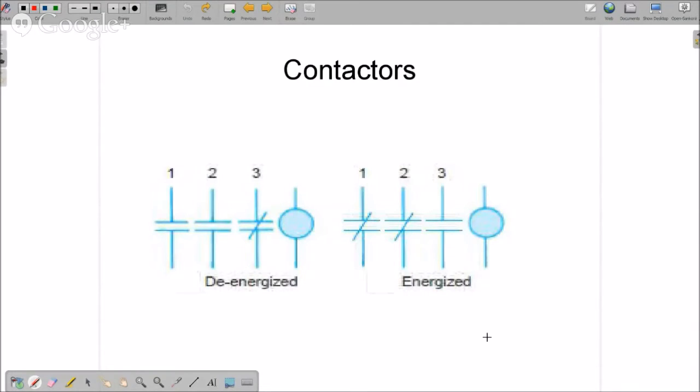Here's another example of the de-energized and energized contactors. Let's look at this again. Here is the contactor coil. It's de-energized meaning that there's no power applied to the coil. The contact number three is normally closed. One and two are normally open. When we apply power to the coil, three now is open and one and two close.